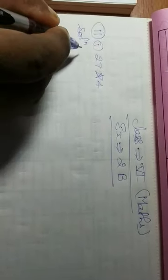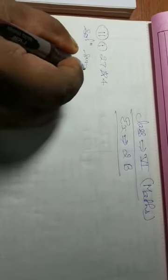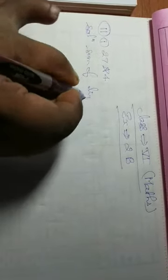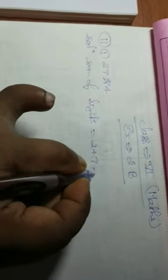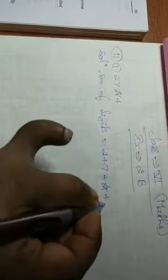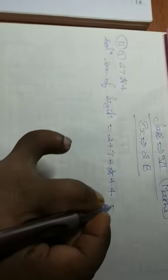First question is 27 star 4. We know that for the test of divisibility by 3, the sum of digits should be a multiple of 3. Sum of digits equals 2 plus 7 plus star plus 4, that is 13 plus star.